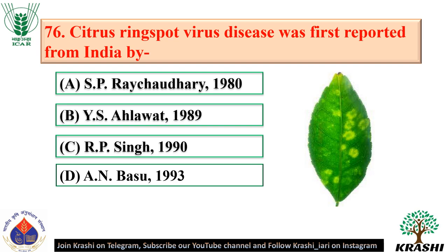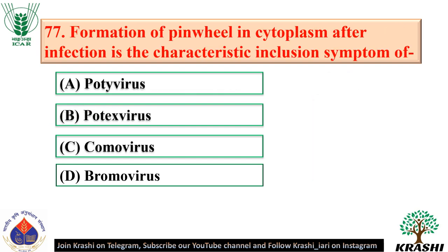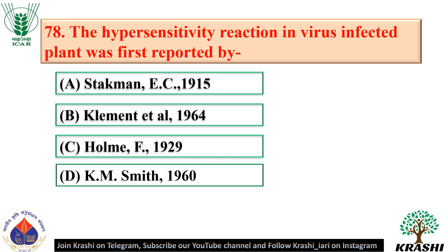Question number 76: Citrus ring spot virus disease was first reported from India by Y.S. Ahlavat in 1989 — option B. Question number 77: Formation of pinwheel inclusions in cytoplasm after infection is the characteristic inclusion symptom of Potivirus — option A. These cylindrical inclusions are composed of virus-encoded CI proteins. Question number 78: The hypersensitivity reaction in virus-infected plant was first reported by Holmes in 1929 — option C.